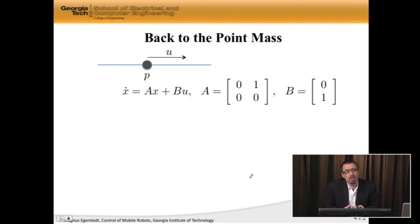Pole placement is a rather powerful idea. So if I have my point mass system again, x dot is Ax plus Bu, where we have our old friends, the A and B matrices that we've seen over and over again.